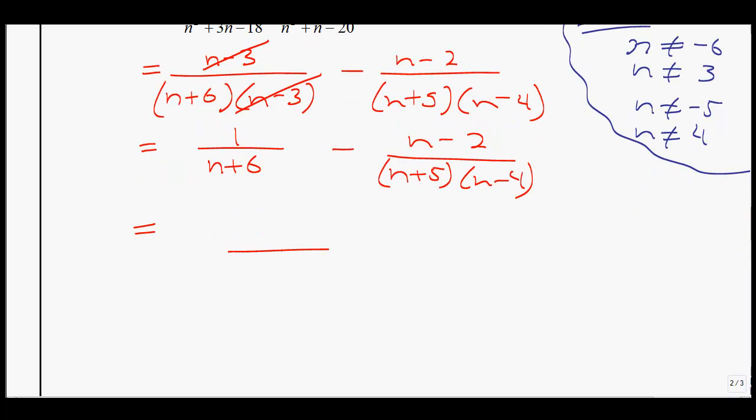Now we need to achieve a common denominator. It's going to be all of these binomials that we have. We have an n plus 6, we have an n plus 5, and we have an n minus 4. So the 1, what was it missing in its common denominator? It's missing both the n plus 5 and the n minus 4, so that needs to be multiplied on this side. And the n minus 2 is missing the n plus 6.